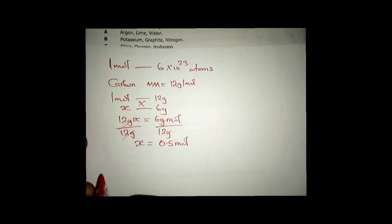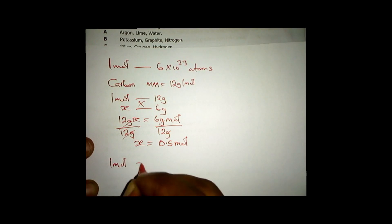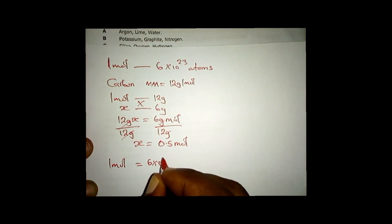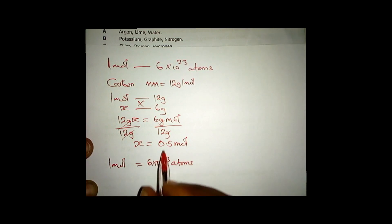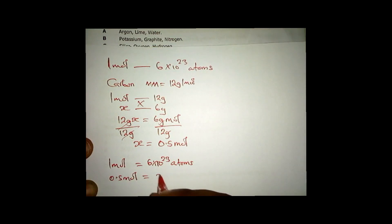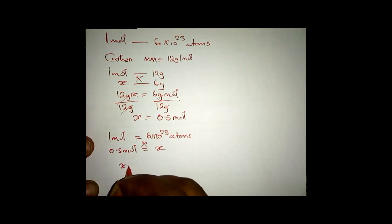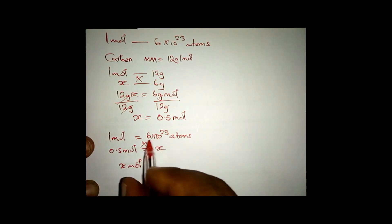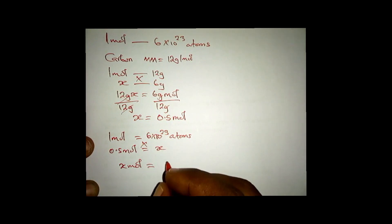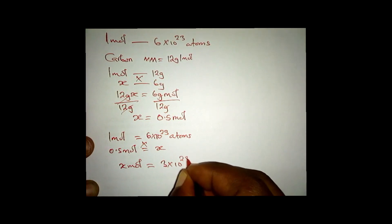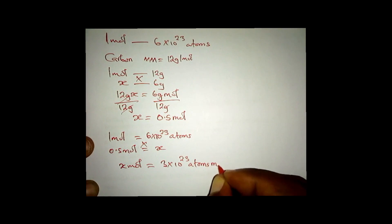Now you know that if you have one mole you have 6×10²³ atoms. What about if you have 0.5 moles — how many atoms x? You cross-multiply: 1 mole times x equals 0.5 times 6×10²³ atoms, which gives you 3×10²³ atoms·moles.